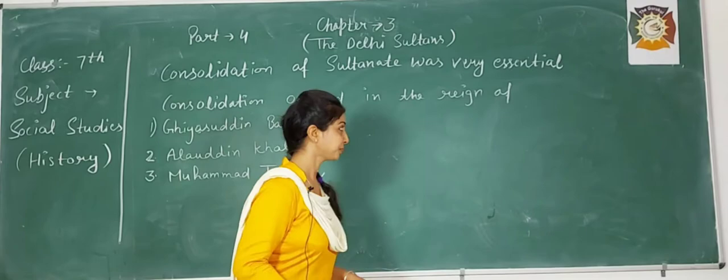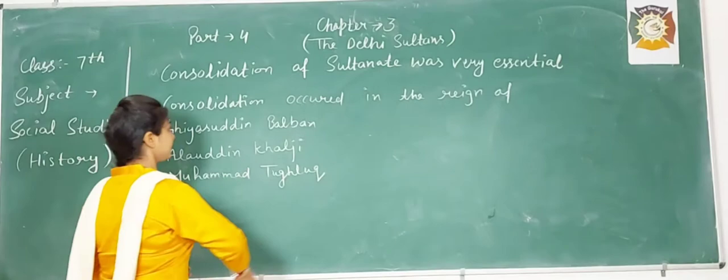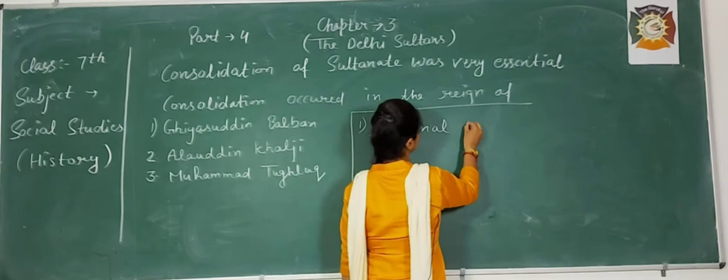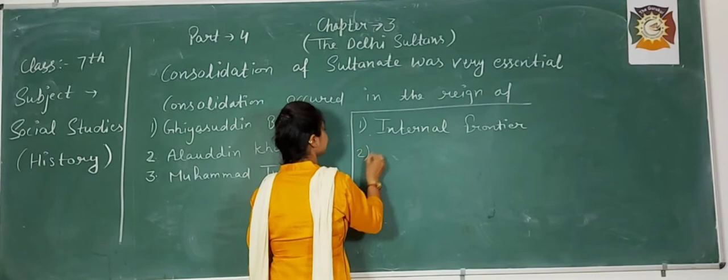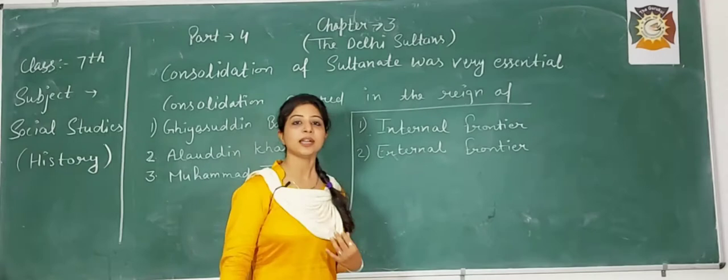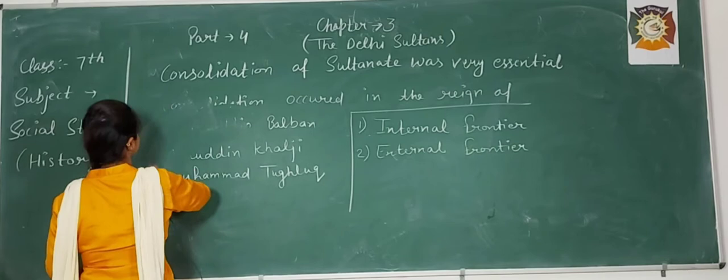These three rulers consolidated the empire in 2 ways, or we can say on 2 fronts. First is internal frontier and second is external frontier. Now we will understand what is meant by internal frontier and what is meant by external frontier.